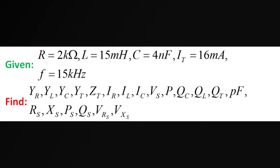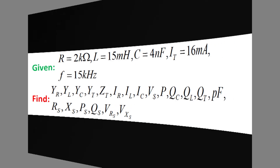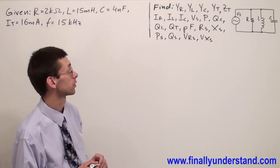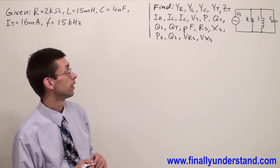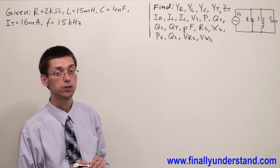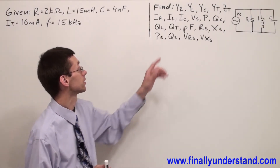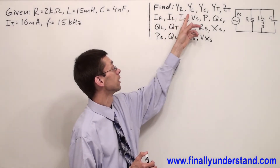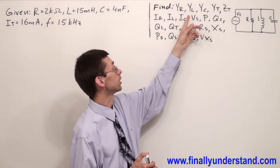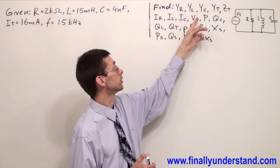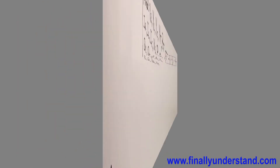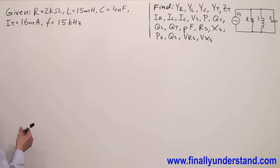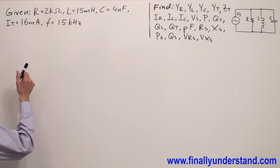Look at this example. This time we're supposed to find the admittance of the resistor, admittance of the inductor, and admittance of the capacitor. So this is nothing else just the conductance, inductive susceptance, and capacitive susceptance.